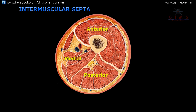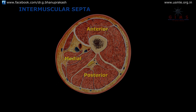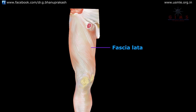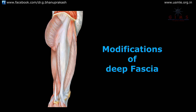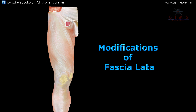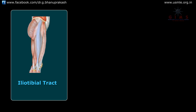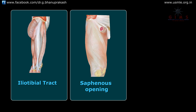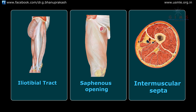So we have successfully completed the topic of the deep fascia called the fascia lata and its modifications. The modifications of the fascia lata are three in number: first is the iliotibial tract, second is the saphenous opening, and third is the intermuscular septa. Thank you.